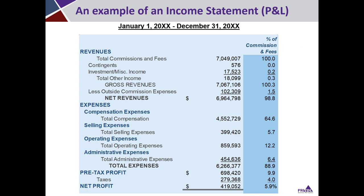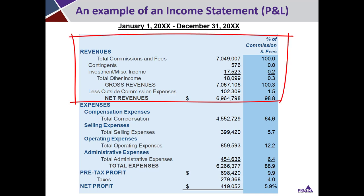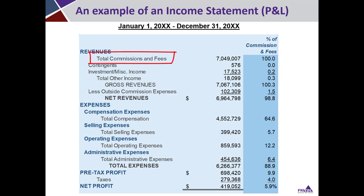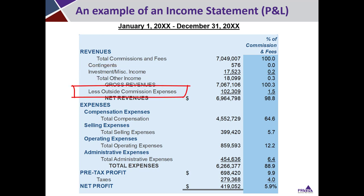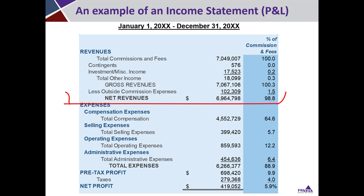Let's talk about the major line items of a sample income statement for a broker. The first section is revenues — income generated through the sales and operations of the brokerage. Revenue comes from several sources: commissions and fees, contingent commissions from carriers, and investment income. You might also need to subtract commissions you're paying out — for instance, if another agency is passing business to you and you're paying them a commission for that.